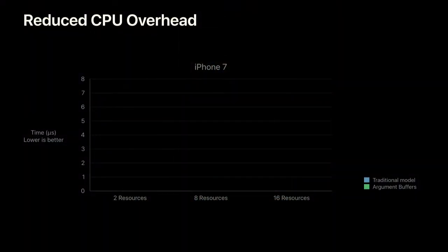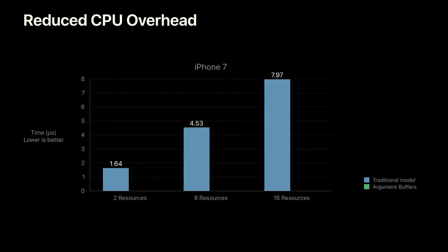We've done a bunch of benchmarks running argument buffers on our devices. On iPhone 7, with the traditional model, the cost of your draw call scales with the amount of resources you use. With argument buffers, the cost stays pretty low and almost flat. With just two resources — a texture and a buffer — you're getting 7x performance improvement. With eight resources, you're getting 18x performance improvement on iPhone 7. And it goes even better with 16 resources.